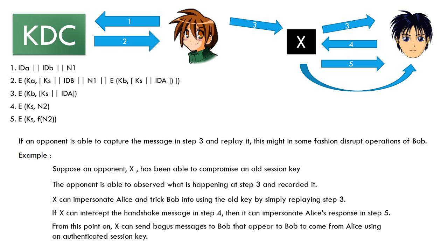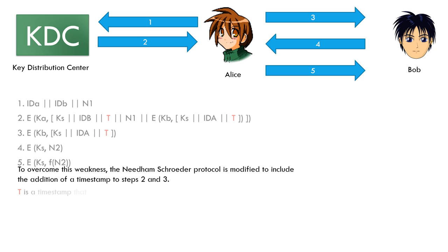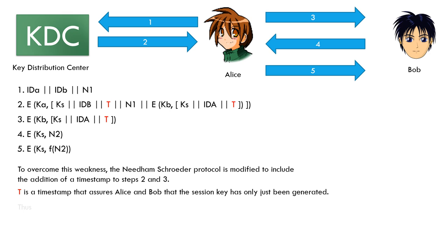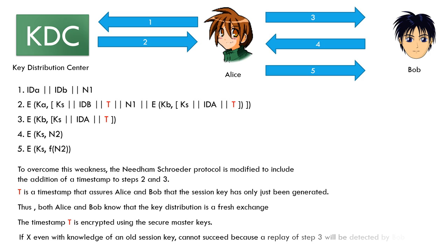To overcome this weakness, the Needham-Schroeder protocol is modified to include the addition of a timestamp to steps 2 and 3. T is a timestamp that assures Alice and Bob that the session key has only just been generated. Thus, both Alice and Bob know that the key distribution is a fresh exchange. The timestamp T is encrypted using the secure master keys. If X, even with knowledge of an old session key, attempts a replay of step 3, it will be detected by Bob as untimely.